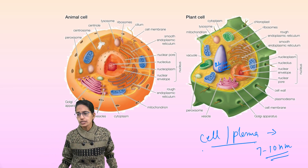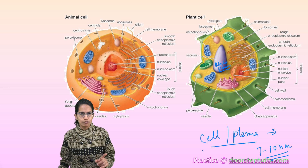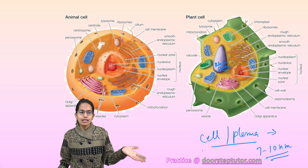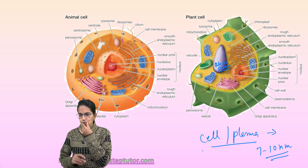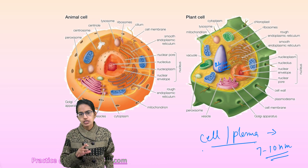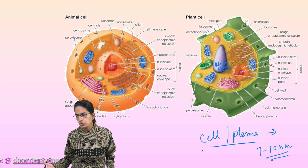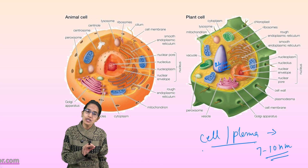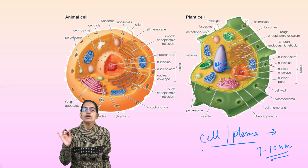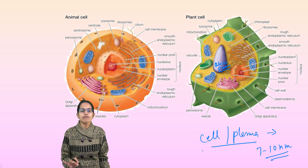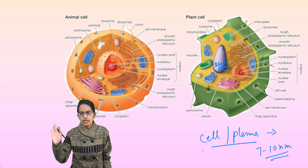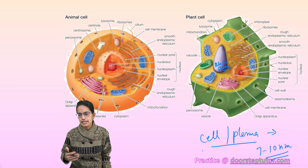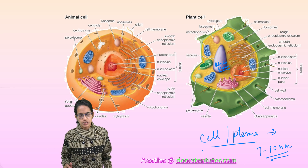Cell wall in the case of plants is not present in animals. Cell wall is the outer covering seen only in plants, made up of cellulose. The important difference between cell wall and cell membrane is that cell membrane is selectively permeable, while cell wall is fully permeable — it allows free entry, exit, and movement of substances within the cell.